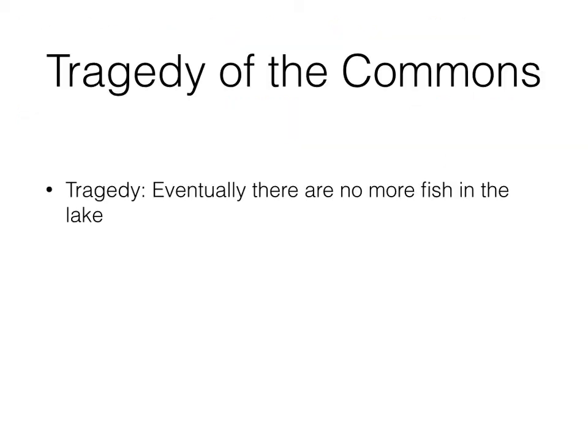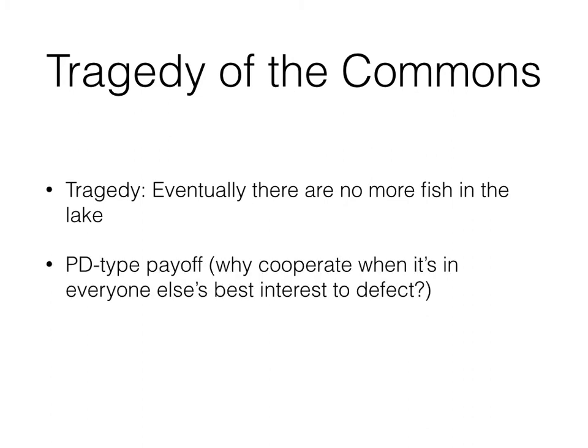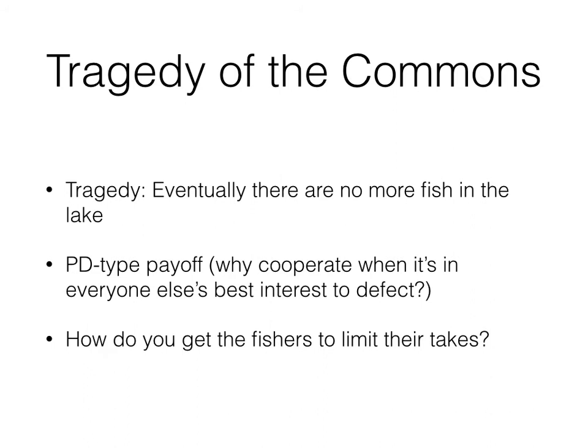The tragedy is that eventually there are no more fish in the lake. We can see how this is a prisoner's dilemma type payoff: why cooperate when it's in everyone else's best interest to defect? It may be a good idea for everybody to cooperate, but it's very hard to get to that solution. It takes a lot of trust that other people are going to cooperate also, and the pull is always for them to defect. So the question becomes: how would you get the fishers to limit their takes?